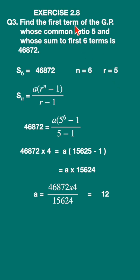We are asked to find the first term, a. Let us write down the formula for Sₙ, the sum of the first n terms of a geometric progression. It is given by Sₙ = a(rⁿ - 1)/(r - 1).